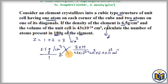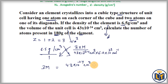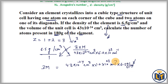On the left side we isolate 3M. On the right side we have 43 × 10⁻²⁴ centimeter cube multiplied by 6.0 × 10²³ per mole, multiplied by 6.5 gram per centimeter cube. The centimeter cube units cancel out, giving us gram per mole — which is the unit of atomic mass that we are going to calculate.